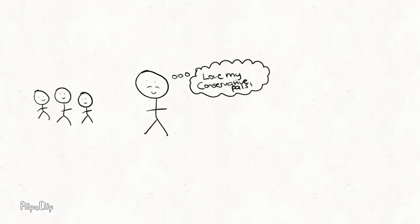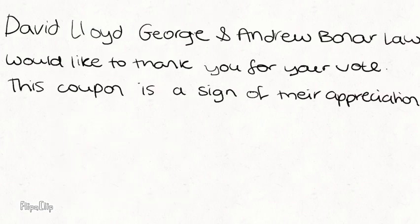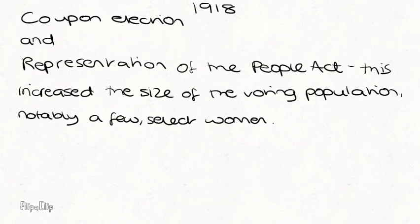The 1918 election was fought between Asquith's Liberals and the Conservative government headed by Lloyd George, who had been successful during wartime and had ultimately won the war for Britain. Those who sided with the Conservatives were given a coupon from Lloyd George and Bonar Law in recognition of their support, hence it was coined the coupon election of 1918. This was also a significant election as it marked the first time women were allowed to vote, thanks to the 1918 Representation of the People Act.